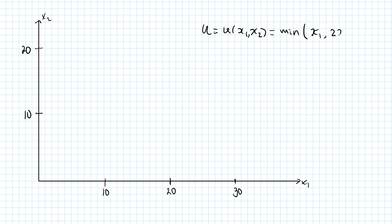This utility function is min of x1 and 2x2. For this utility function, the bundle (20, 10) will have a utility of min(20, 2×10) = min(20, 20) = 20. So this bundle will be associated with the utility of 20.